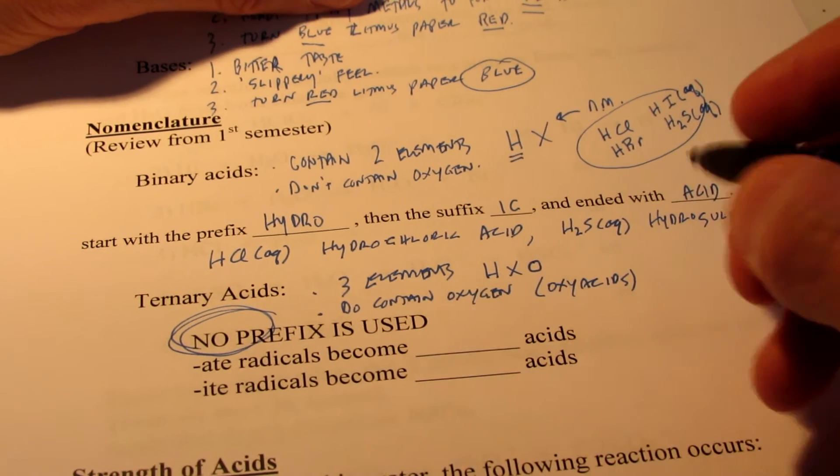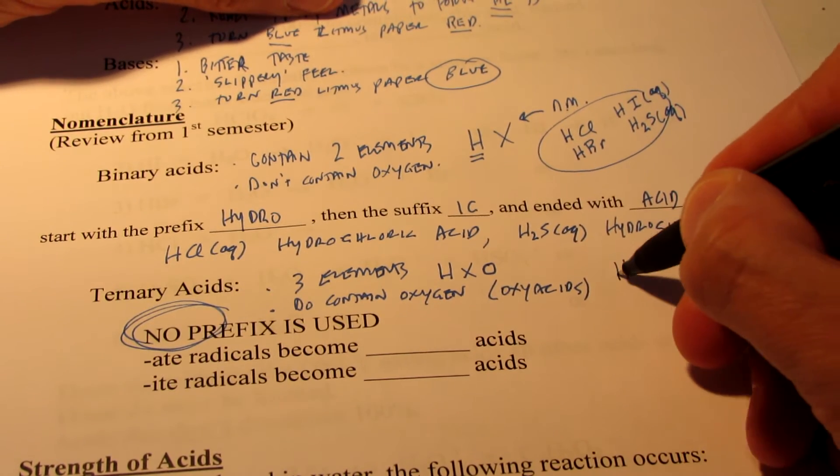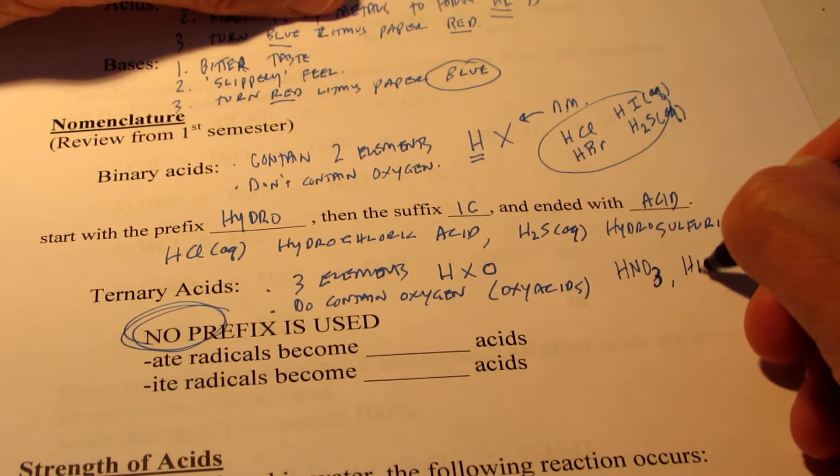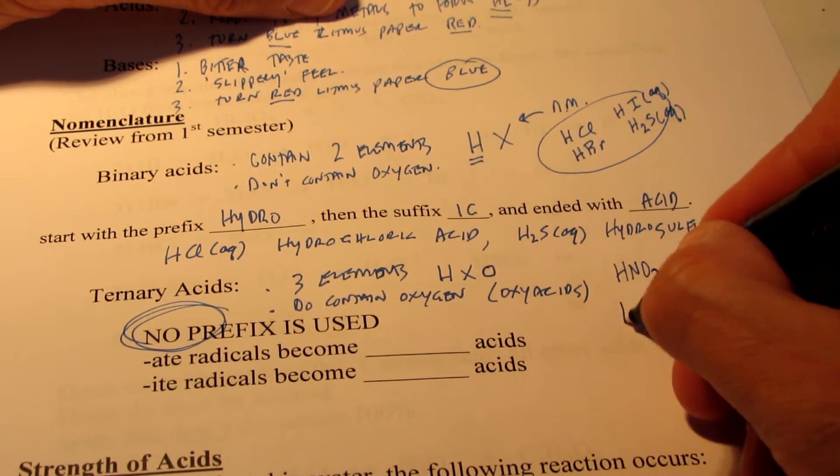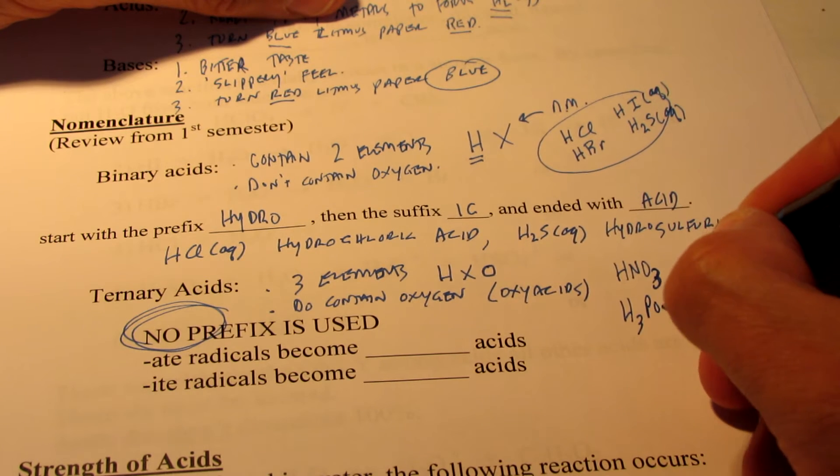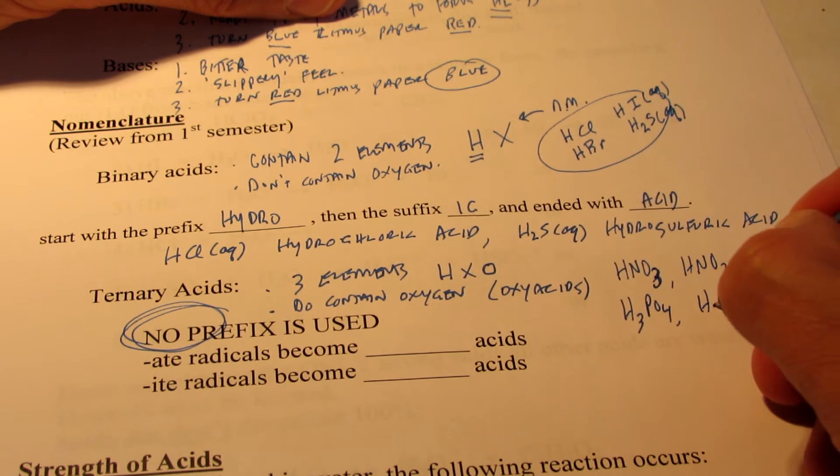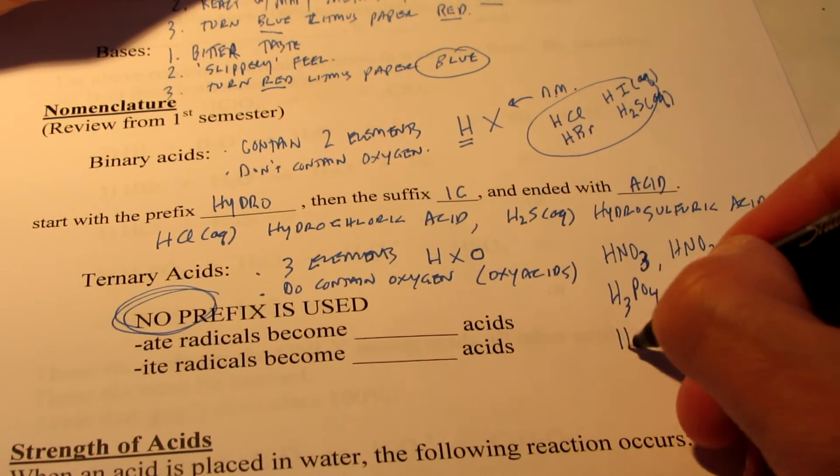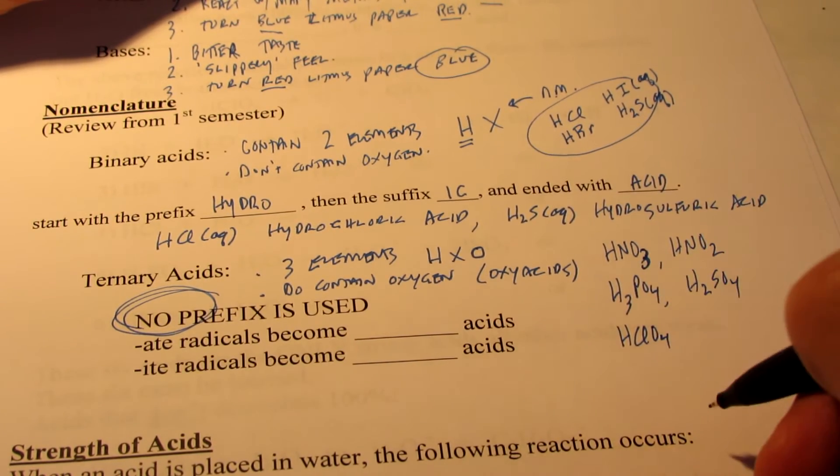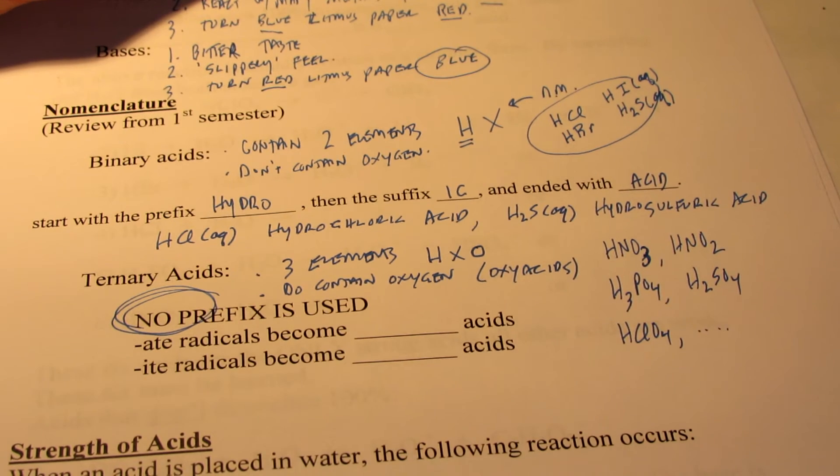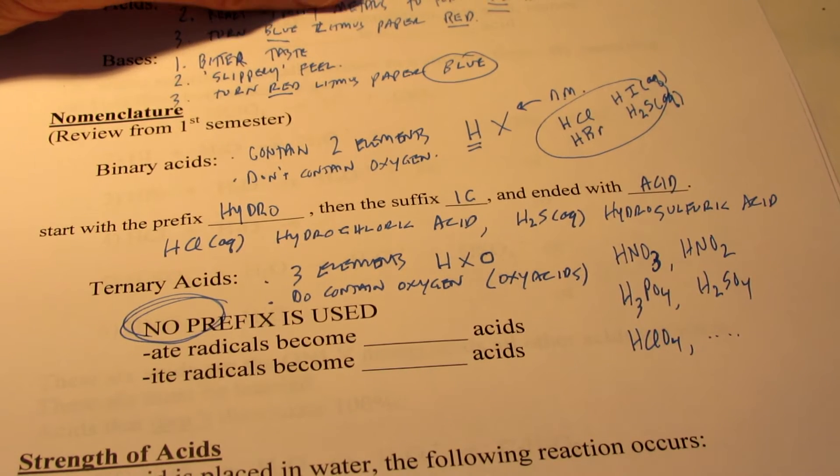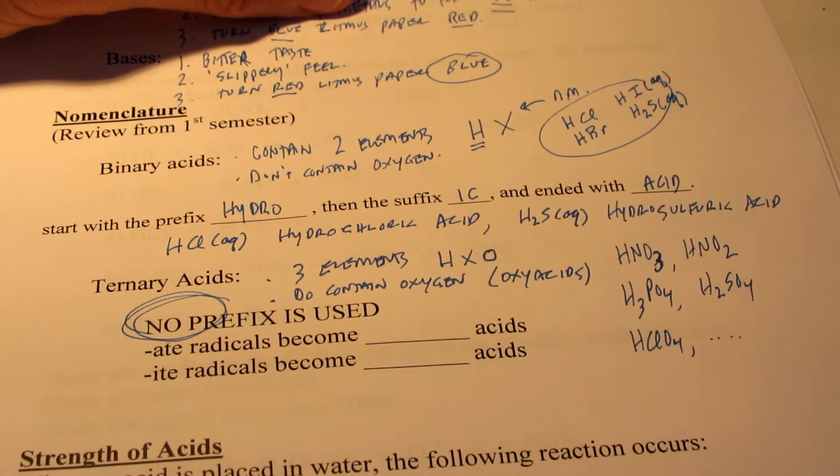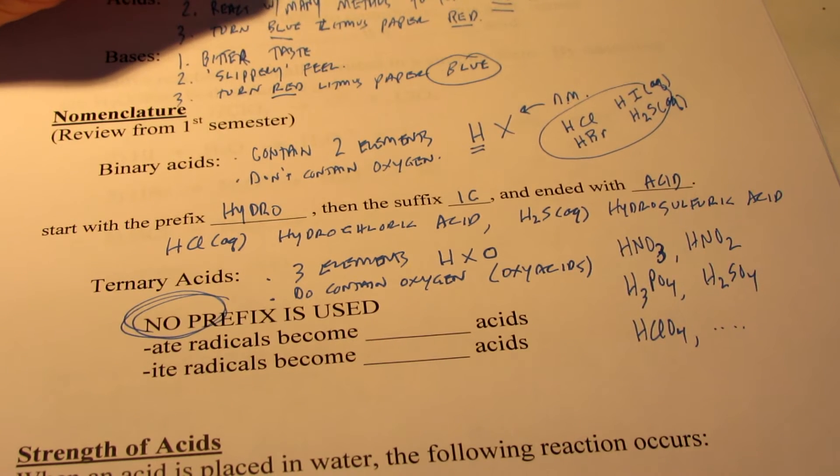Let me give you a couple of examples here. HNO3, HNO2, H3PO4, H2SO4, HClO4, and there are many others we could come up with, but you notice that they have three elements. We have hydrogen, a non-metal, and then of course oxygen, and that's where the name oxyacid comes from.